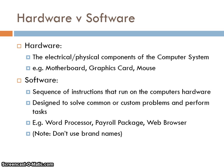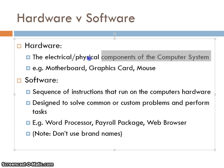Hardware is the electrical physical components of the computer system. Some examples of these are motherboard, graphics card, mouse, and keyboard. It is anything that you can see or touch, but the definition is crucial: the electrical physical components of the computer system.